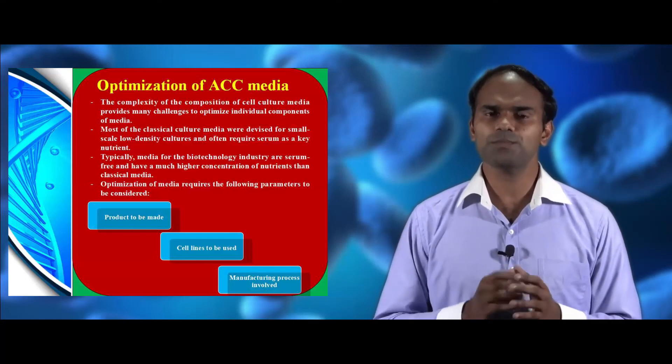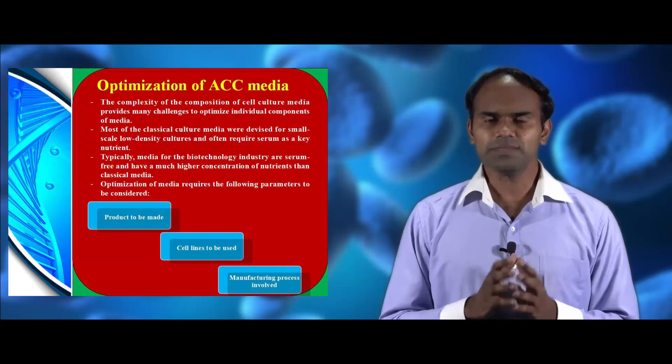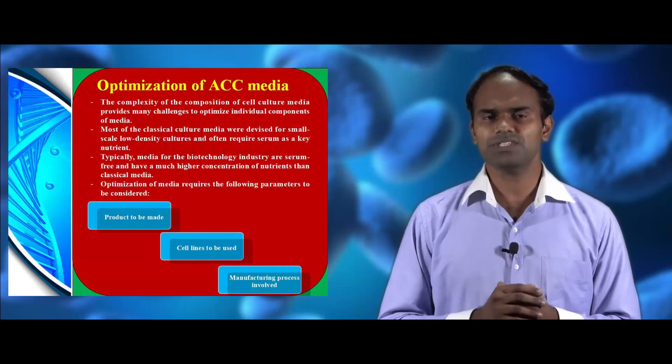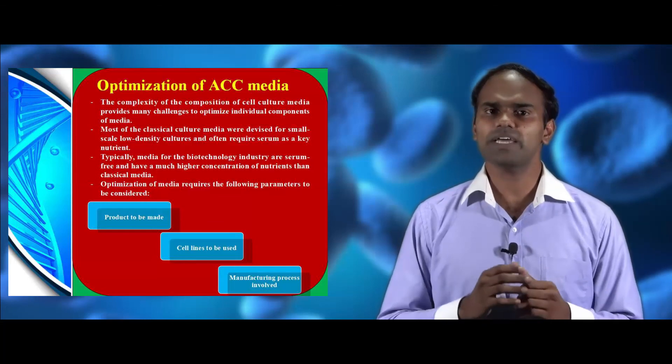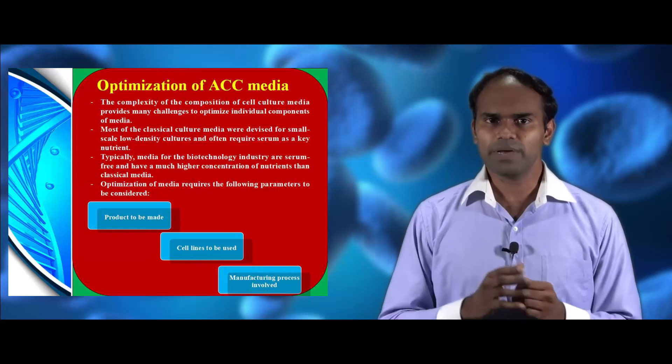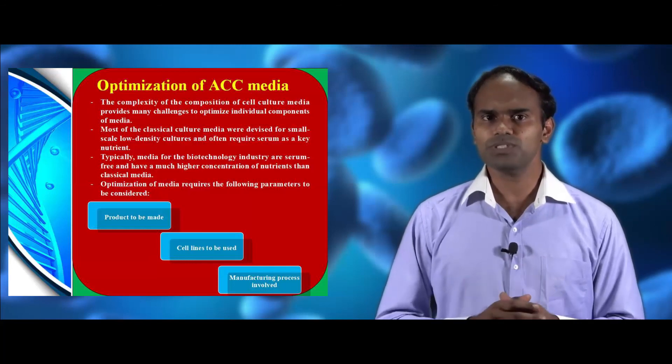Now we see about the optimization of animal cell culture media. The complexity of media composition provides challenges in optimizing individual ingredients. Classic media is designed for low-density cell cultures with serum as a key nutrient; however, the biotechnology industry uses serum-free media with higher nutrient concentrations. Parameters to consider for optimization include the product to be made, cell lines to be used and the manufacturing process involved. I hope you have all understood about the basic components, types, commonly used media, and optimization of animal cell culture media. In the next session we will see about characterization of cell lines. Thank you.